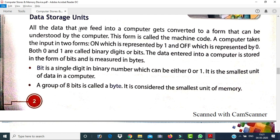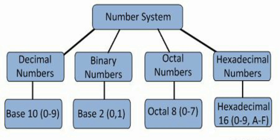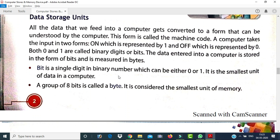Now, what is a data storage unit? All the data that we feed into a computer gets converted into a form that can be understood by the computer — this is called machine code. A computer takes input in two forms: ON, which represents one, and OFF, which is represented by zero. Both zero and one are called binary digits. A computer understands only machine language.